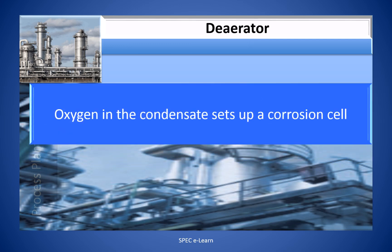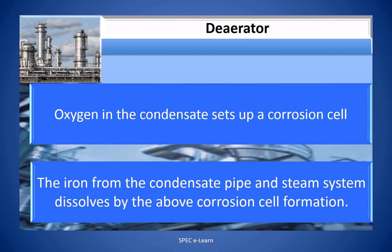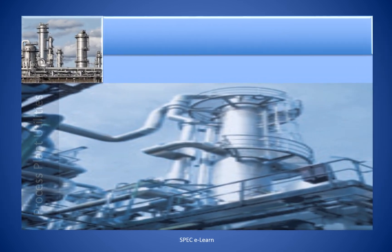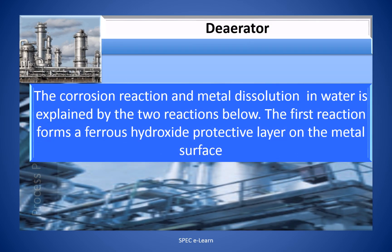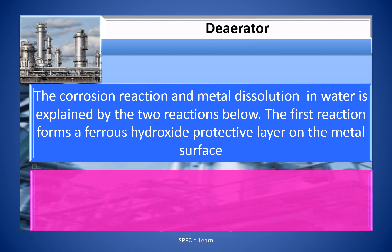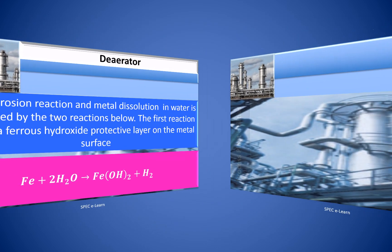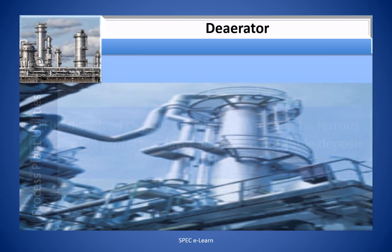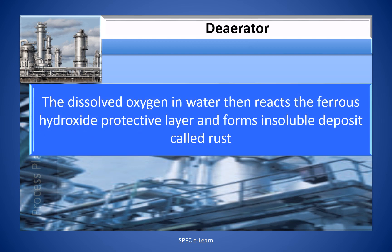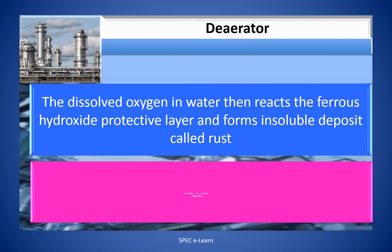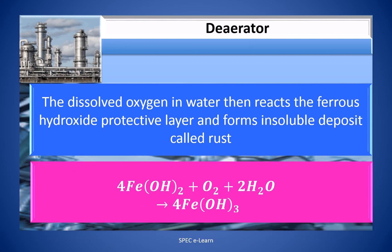Oxygen in the condensate sets up a corrosion cell. The iron from the condensate pipe and steam system dissolves by the above corrosion cell formation. The corrosion reaction and metal dissolution in water is explained by two reactions. The first reaction forms a ferrous hydroxide protective layer on the metal surface: Fe + 2H₂O → Fe(OH)₂ + H₂. The dissolved oxygen in water then reacts with the ferrous hydroxide protective layer and forms an insoluble deposit called rust: 4Fe(OH)₂ + O₂ + H₂O → 4Fe(OH)₃.